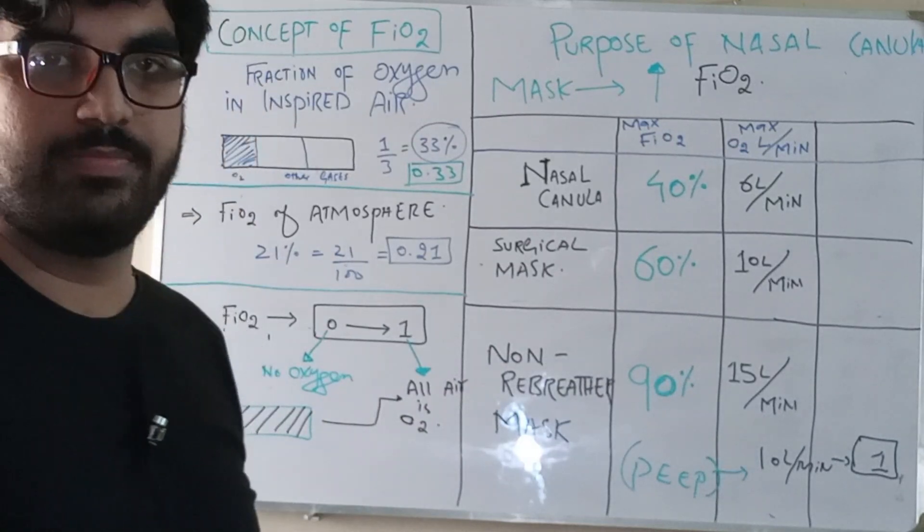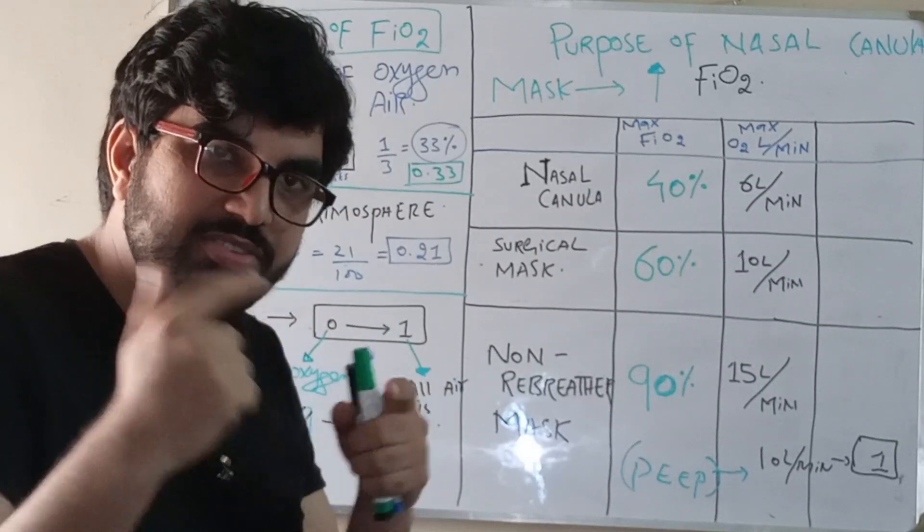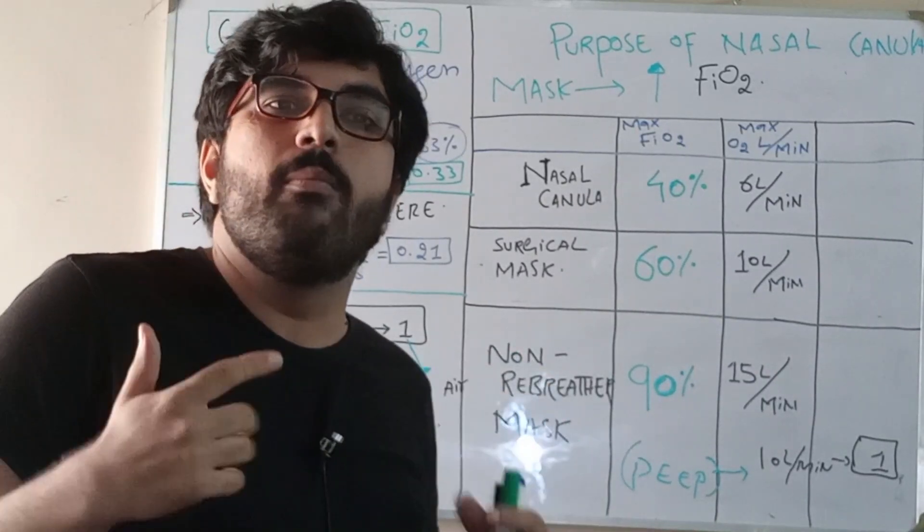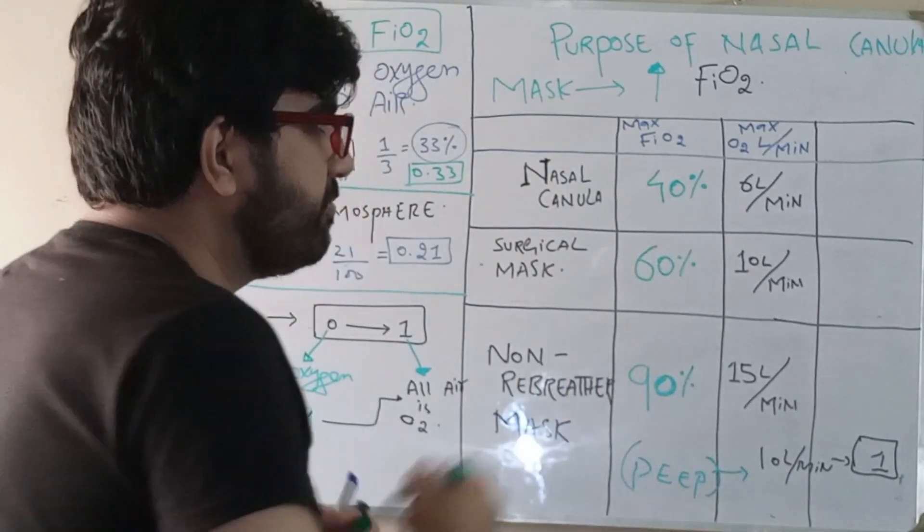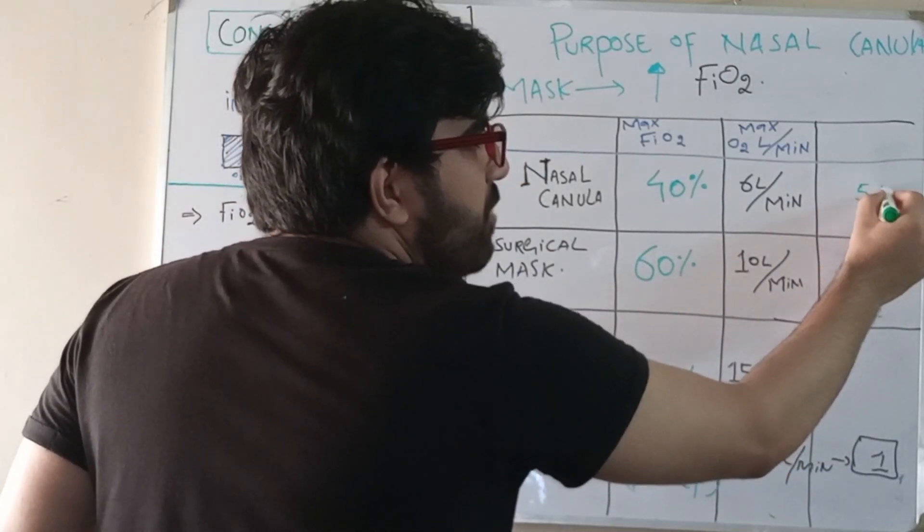It is improving, or in other words, it is matching the V/Q, decreasing the mismatching, increasing the matching. So it increases the hypoxemia. Point number two: it recruits more and more alveoli.